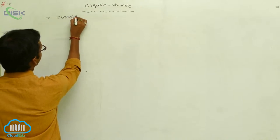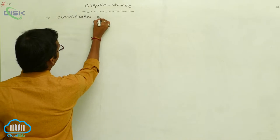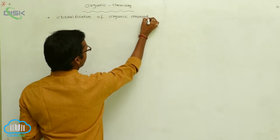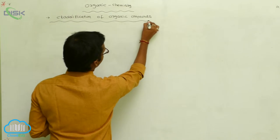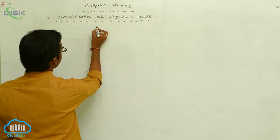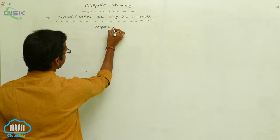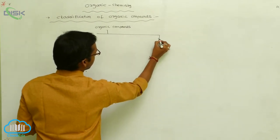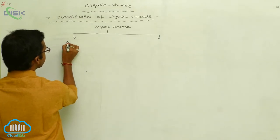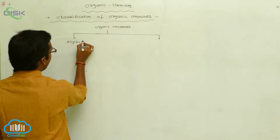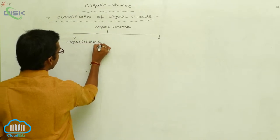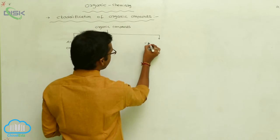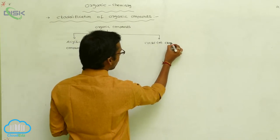Classification of organic compounds. Organic compounds are generally classified into two types: one is acyclic or open chain compounds, and the next one is cyclic or closed chain compounds.